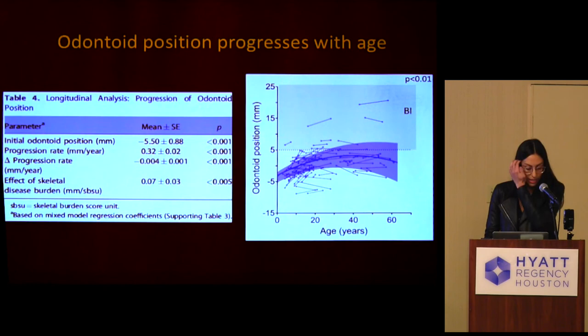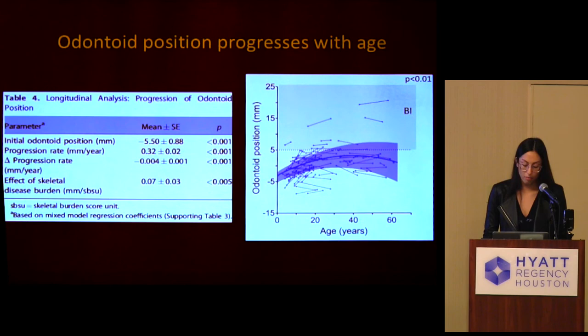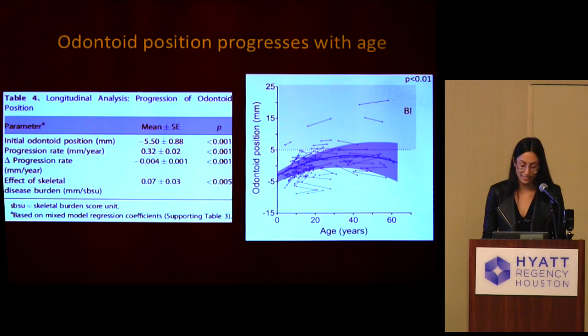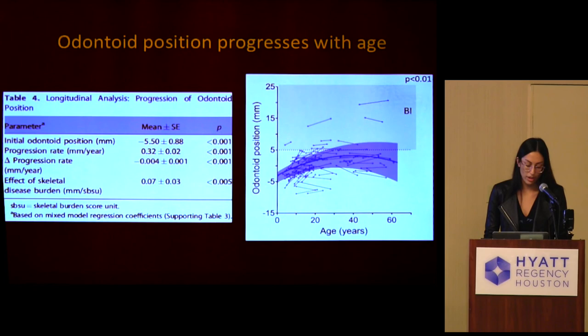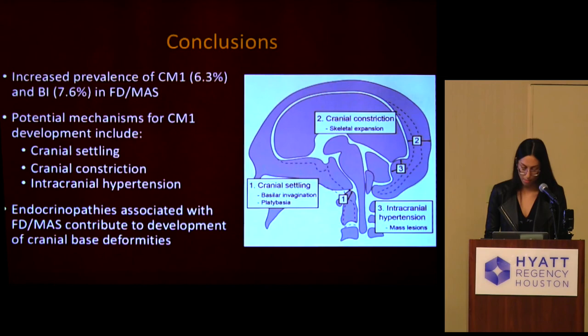In our longitudinal analysis, tonsillar position did not significantly change with age. However, odontoid position did progress with age, with the greatest rate of change occurring in childhood and adolescence. Each line in the graph represents a patient's first and last odontoid position measurement on CT scans, and the blue line represents predicted values from our mixed model analysis. The mean progression rate was 0.23 millimeters per year, and this progression rate tended to decrease with age. Of all the endocrinopathies and other associations with fibrous dysplasia, only skeletal disease burden had an effect on progression.